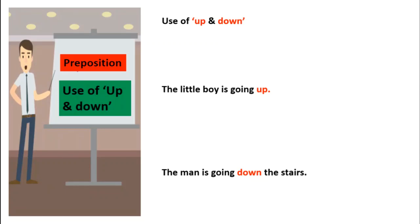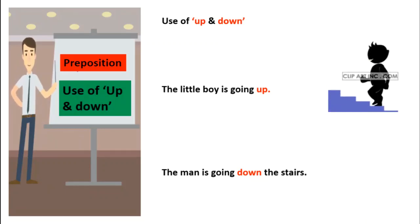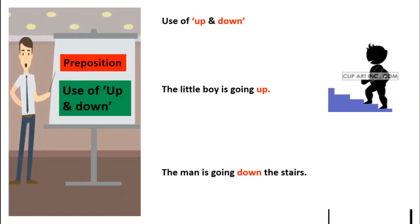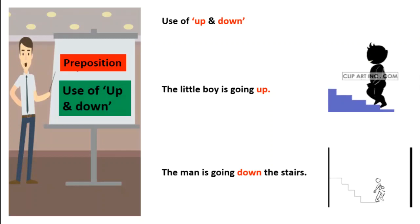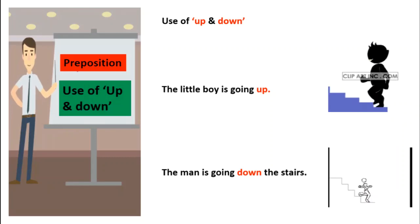Use of 'up' and 'down'. The little boy is going up. When someone or something goes up, we use the preposition 'up'. And when someone or something goes down, we use the preposition 'down'. Like, the man is going down the stairs.